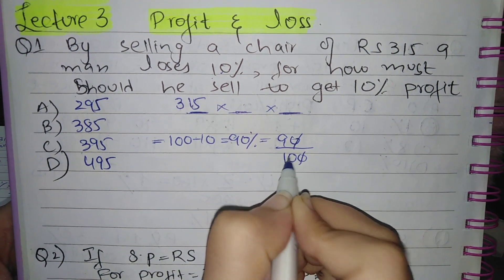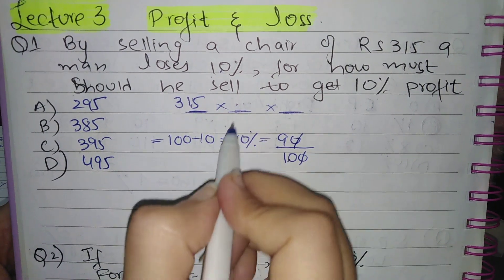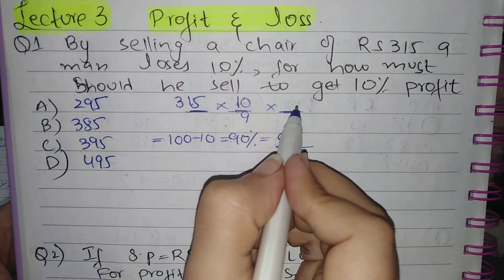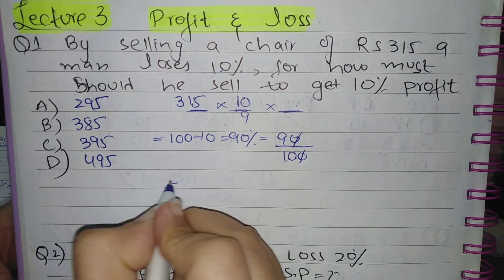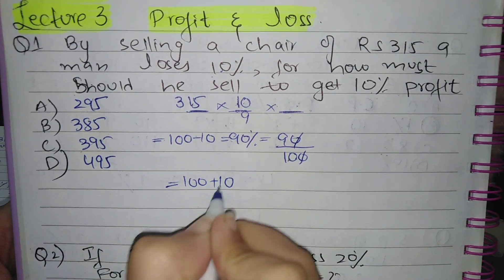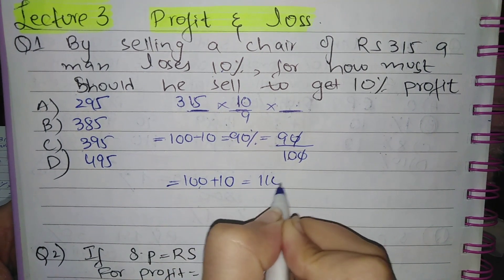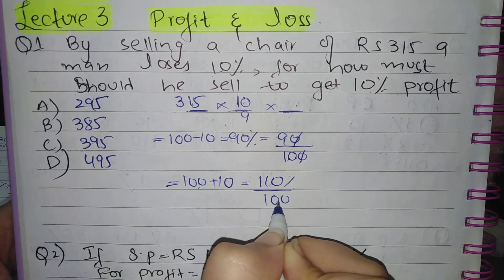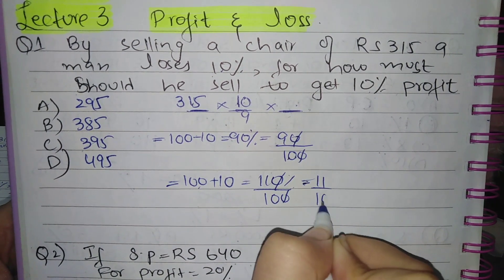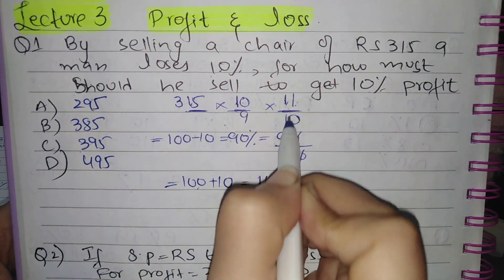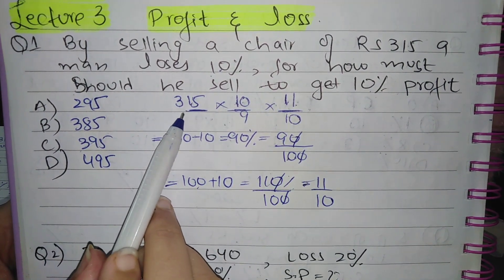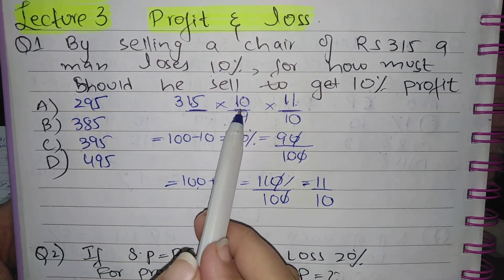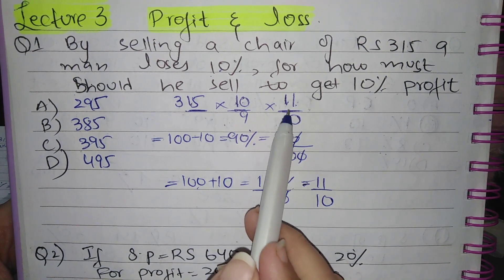In the second part, write the reciprocal of the loss percent fraction, so 9 by 10 becomes 10 by 9. In the third part, find the profit percent: 100 plus 10 equals 110 percent, which is 110 by 100, simplified to 11 by 10. Write this as it is. So the three parts are: selling price, reciprocal of loss percent, and profit percent.